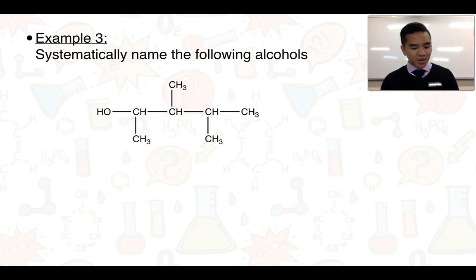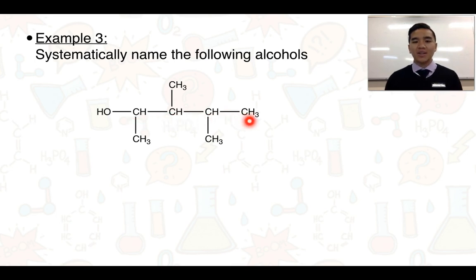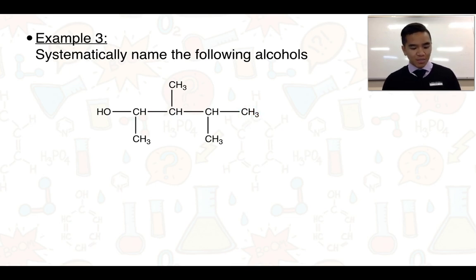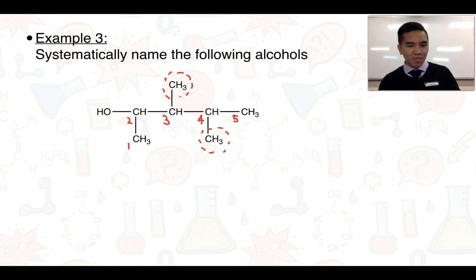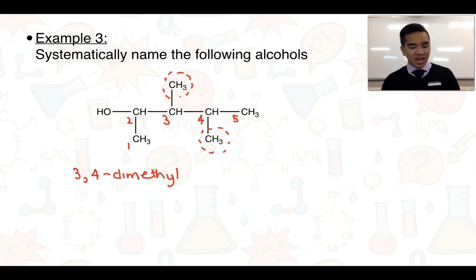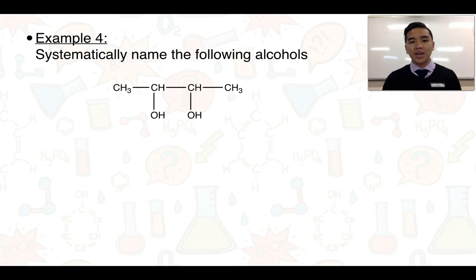Third example: again determine the longest carbon chain, and it must contain the –OH group. We might consider four carbons, but we actually have a chain of five, so this is going to be a pentanol. After numbering the carbons and indicating the methyl groups — there are two of them, on carbons three and four — with five carbons it's going to be a pentan-, and we indicate that the hydroxyl group is on carbon two.